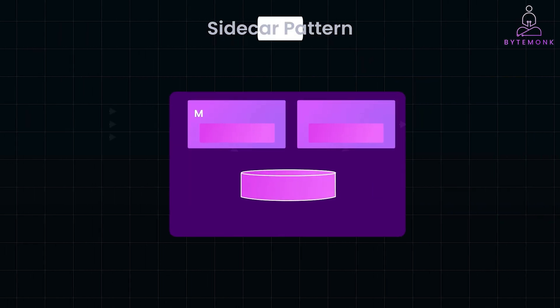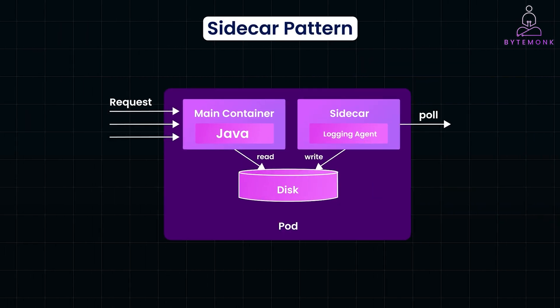For example, the sidecar could act as a logging agent, forwarding logs to a centralized system. It could monitor the application's performance and send metrics. It could also retrieve secrets such as API keys or database credentials. In fact, in a service mesh architecture, a sidecar container like Istio manages network traffic, load balancing, and inter-service communication.